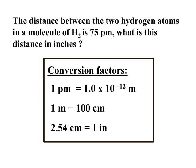Our first problem is converting the distance between two hydrogen atoms from picometers to inches. You want to be able to take your problem and read through it. The distance between two hydrogen atoms in a molecule of H2 is 75 picometers. What is the distance in inches? So really you're saying 75 picometers equals how many inches?